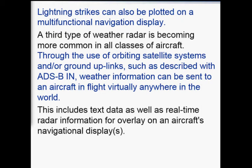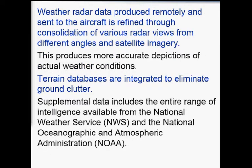A third type of weather radar is becoming more common in all classes of aircraft: the use of satellite information. Through orbiting satellite systems and ground uplinks, such as described with ADS-B, weather information can be sent to an aircraft in flight anywhere in the world. This includes text data as well as real-time radar information for overlay on the aircraft's navigation display. Weather radar data produced remotely and sent to the aircraft is refined through consolidation of various radar views from different angles and satellite imagery, producing a more accurate depiction of actual weather conditions. Terrain databases are integrated to eliminate ground clutter.